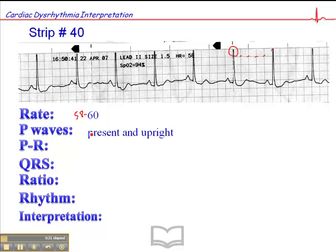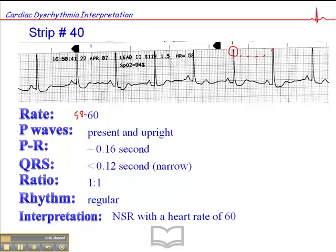The P waves are present and upright. The PR interval is approximately 0.16 second. The QRS is narrow — less than 0.12 second. The ratio of P waves to QRS is 1 to 1. The rhythm is regular. Assuming the heart rate is 60, this is a normal sinus rhythm. It's as simple as that.